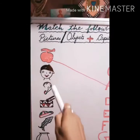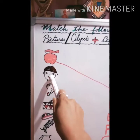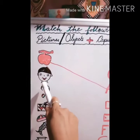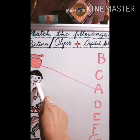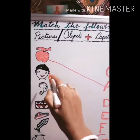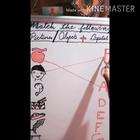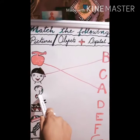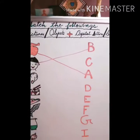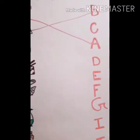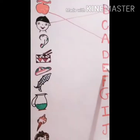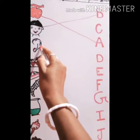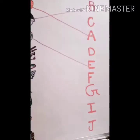Understood? Second picture is B. Always see the left side picture first. B for boy — where is B? Here. Now what is this? E for ear. Now find out where is E. E is here. So you have to join, like this.